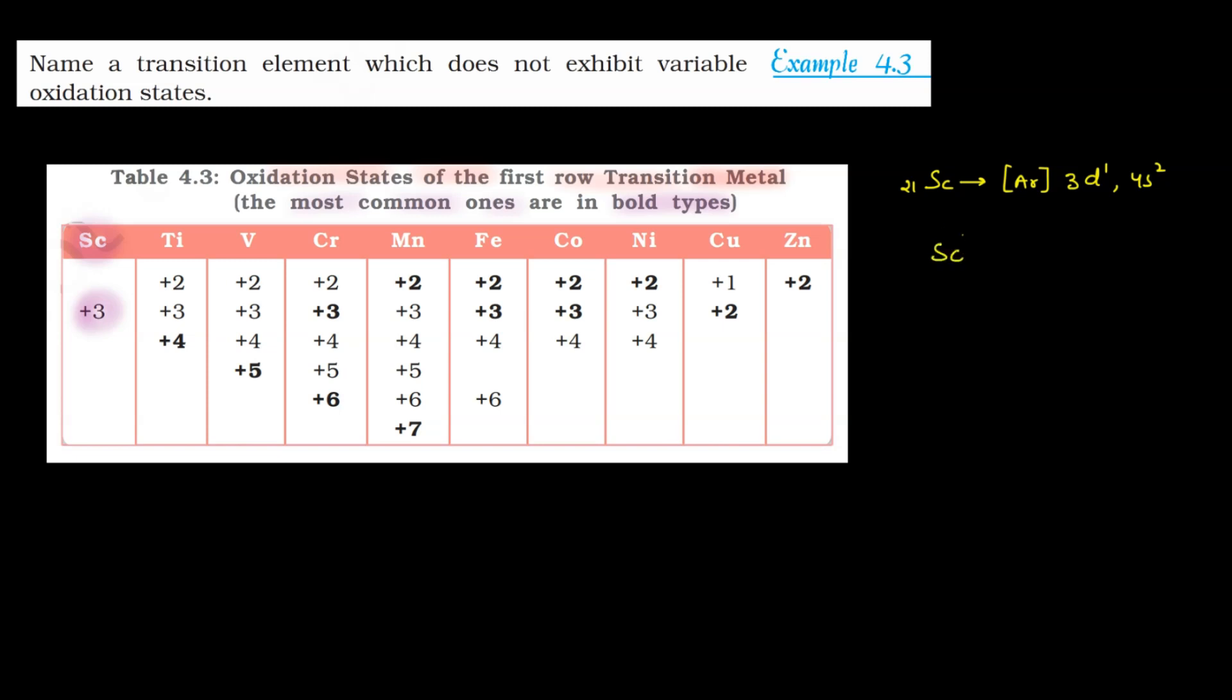aur uske baad 3d¹ and 4s². To ye sirf aur sirf ek hi oxidation state show karta hai, which is plus 3. So scandium plus 3 mein jayega, to yahan par aapko milega electronic configuration of noble gas, and this is 3d⁰ and 4s⁰, theek hai?